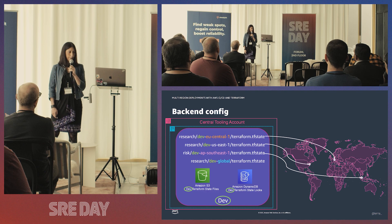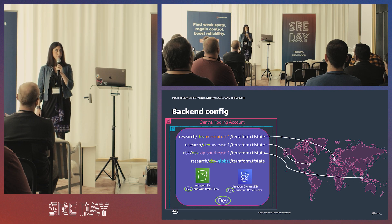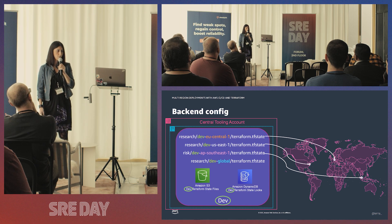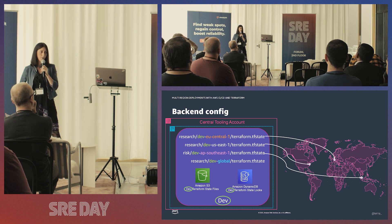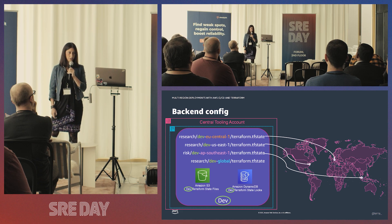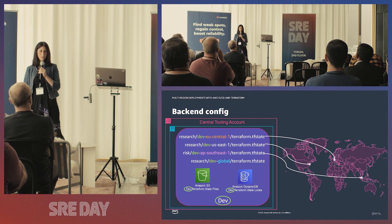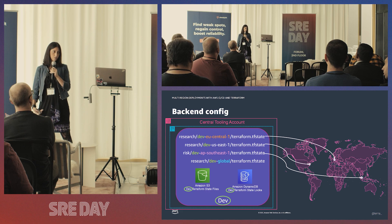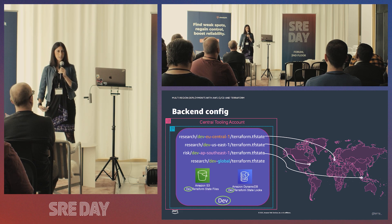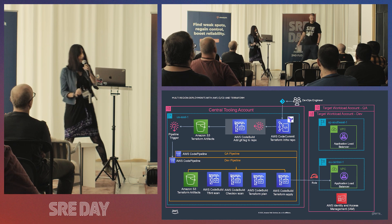Regarding backend configuration: there is isolation per environment. Terraform state files should be separated per environment type — dev versus prod — and also separated per environment and per region. This means if there are glitches in one region, the other regional deployments for that account are not affected. Also, when expanding deployments to additional regions, the existing regional deployment state files are not affected.